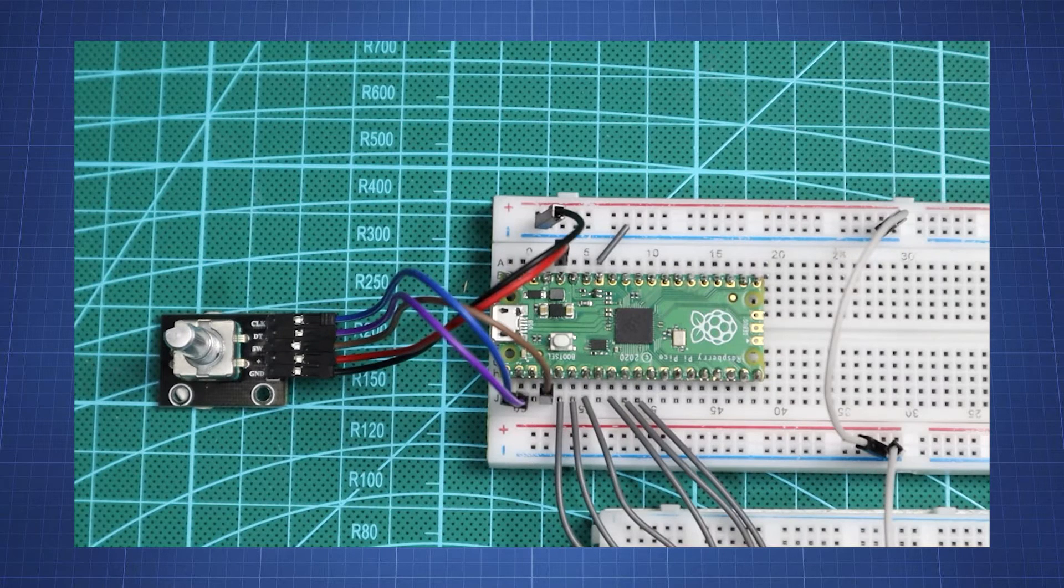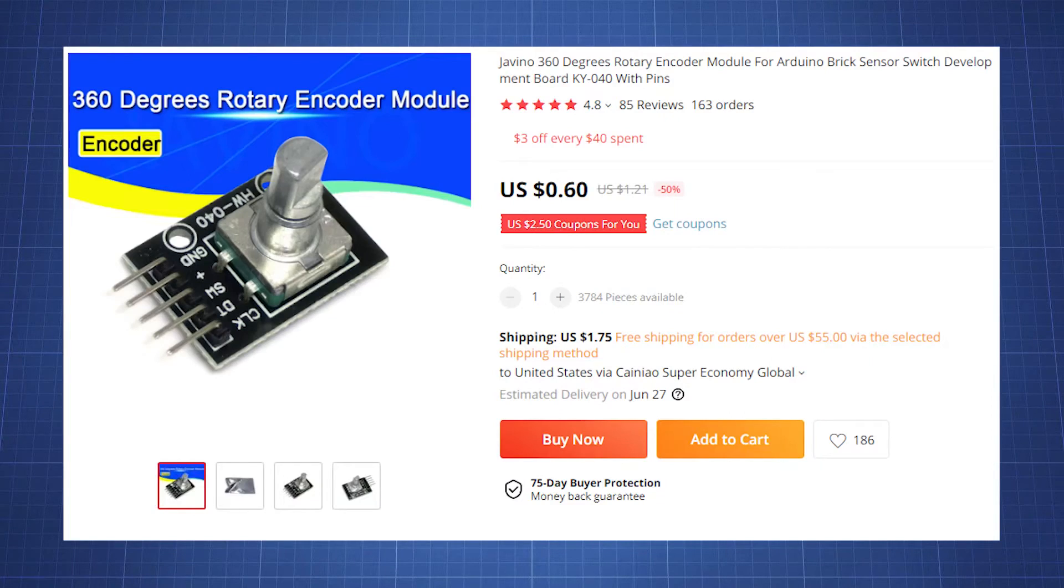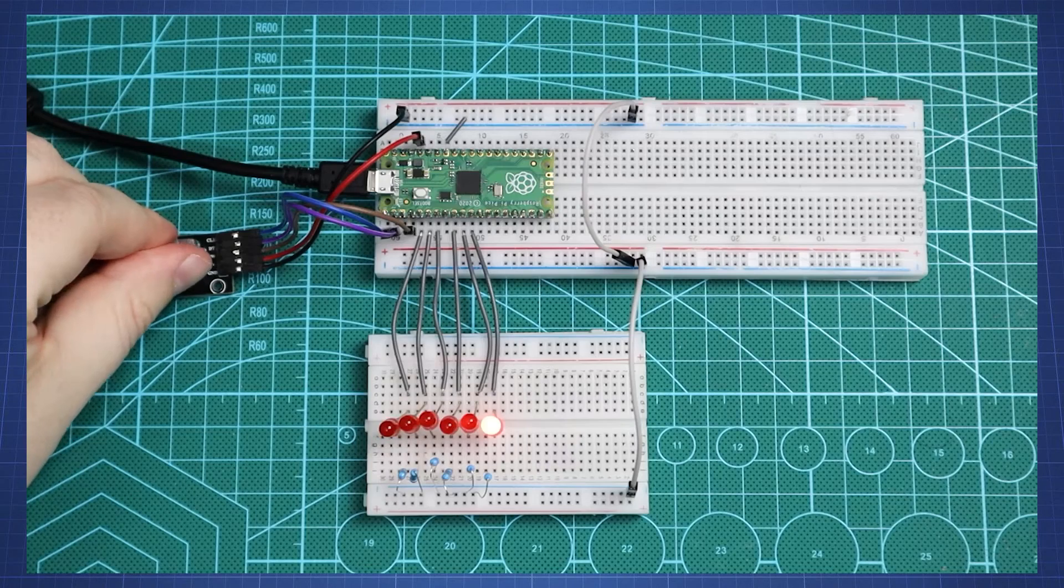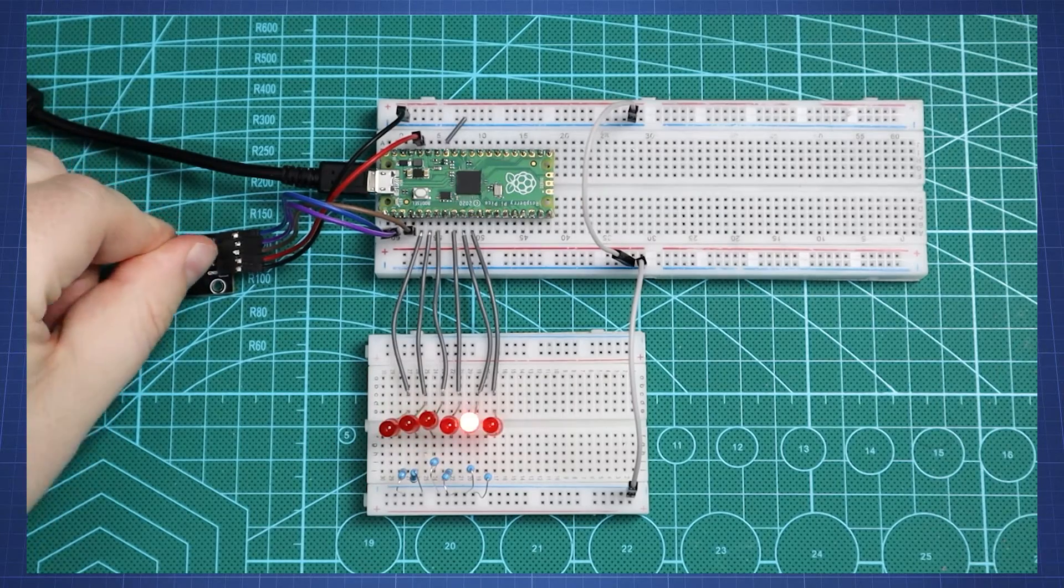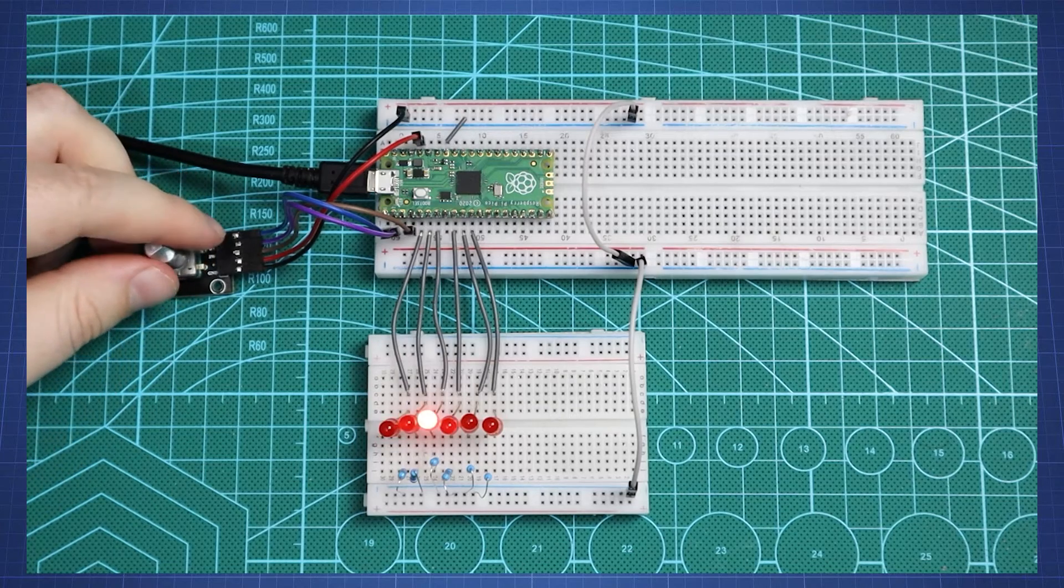In this tutorial we will look at setting up and using a rotary encoder with the Raspberry Pi Pico. We will look at a common rotary encoder module found in many microcontroller kits and for a simple demonstration we will use it to turn on a specific LED in a row either by turning the knob clockwise or anticlockwise.